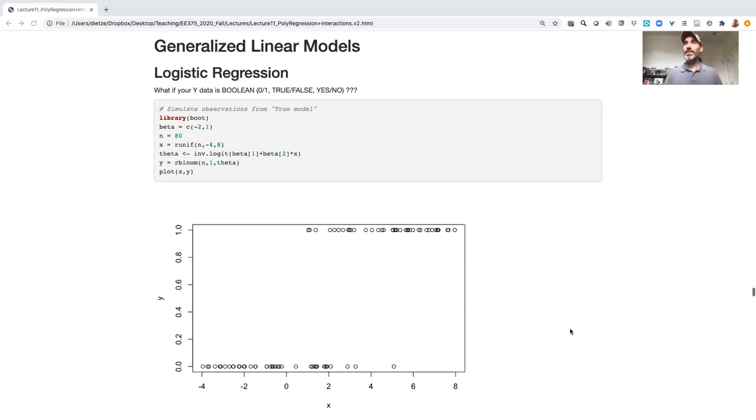Remember that one of the classic assumptions of linear models is not only are the models linear, but the error follows a normal distribution. So generalized linear models are going to keep the assumption that the model is linear, or at least some transform is linear, but then relax the assumption that the errors have to be Gaussian.